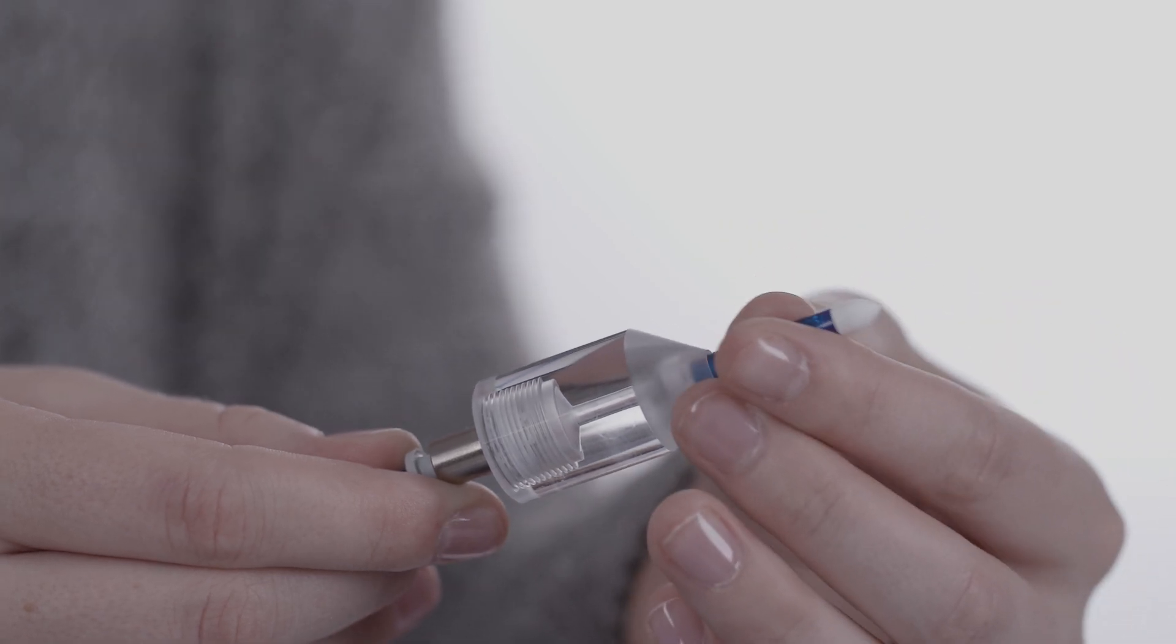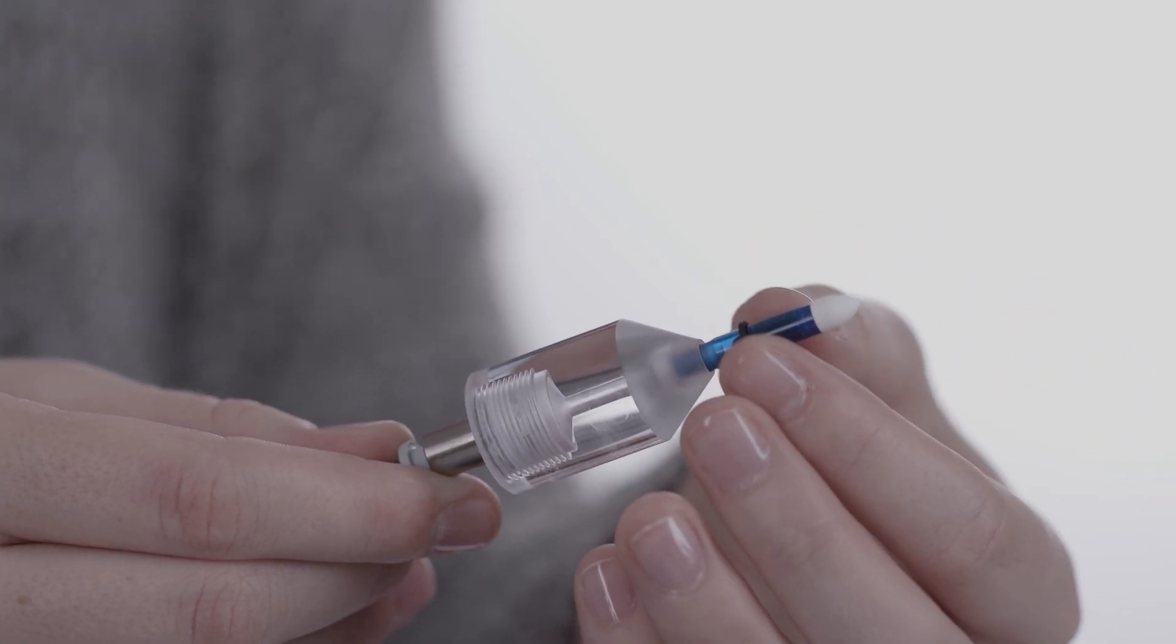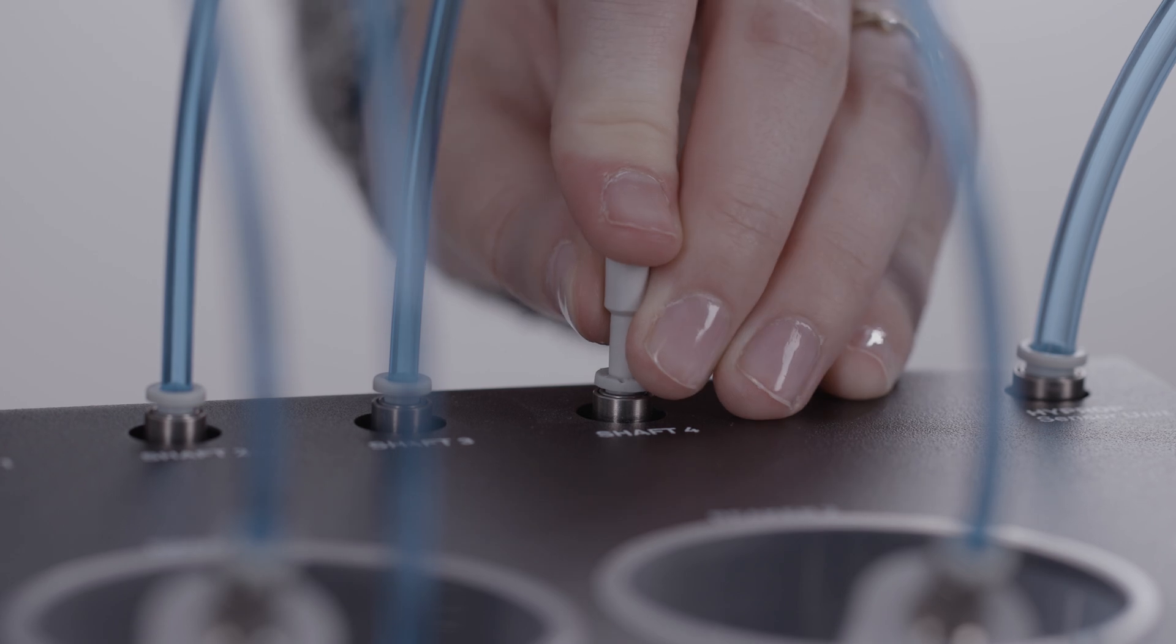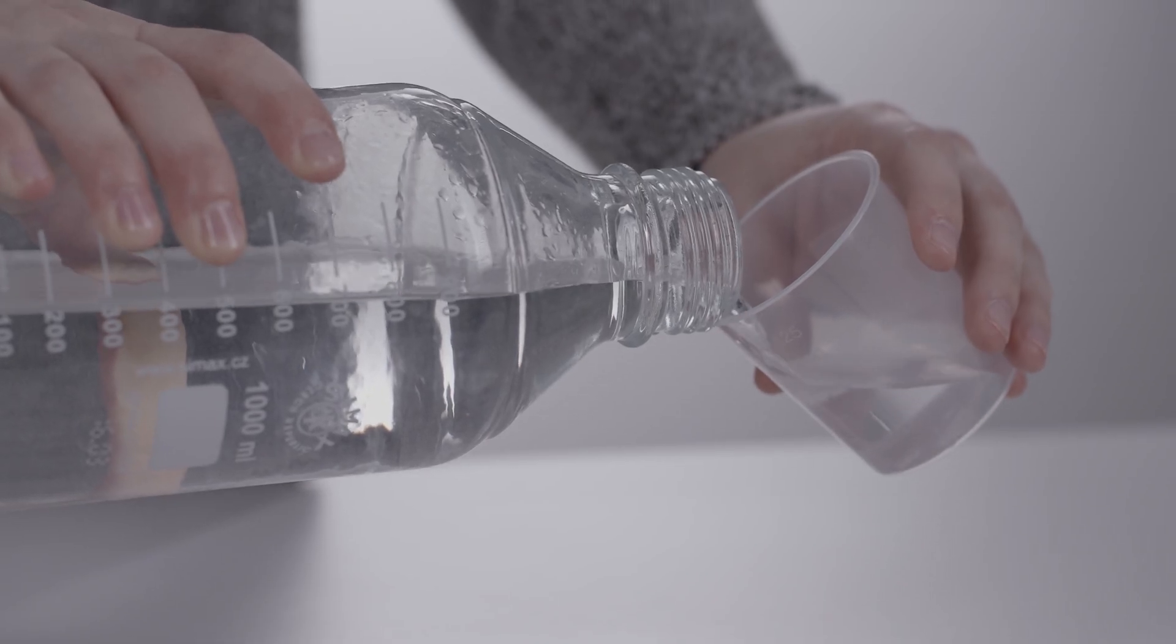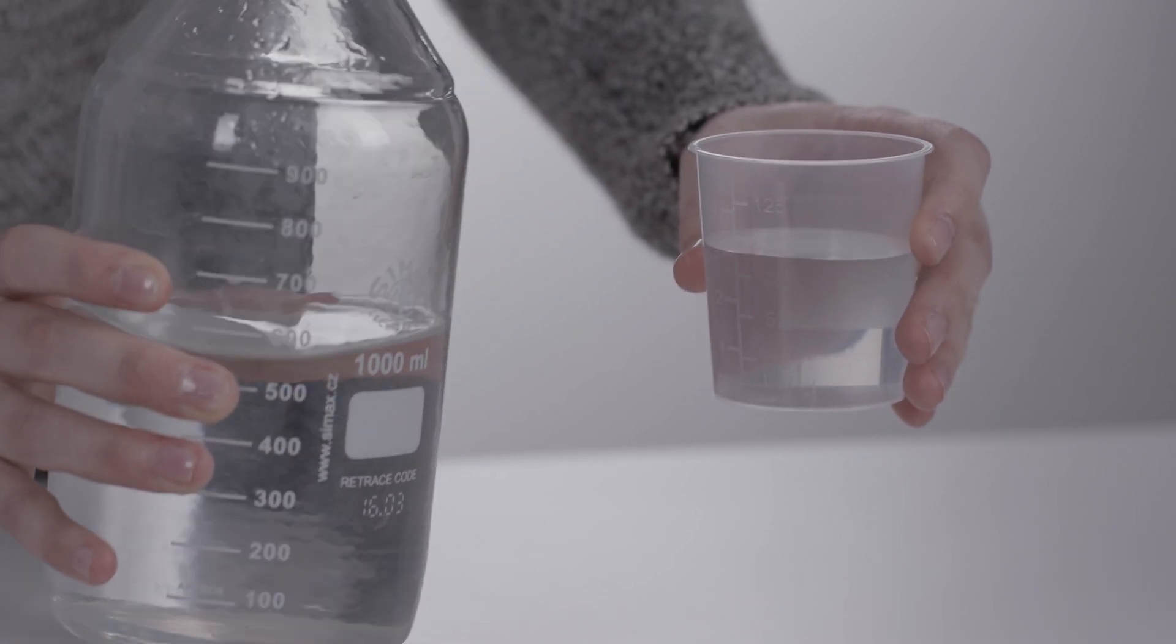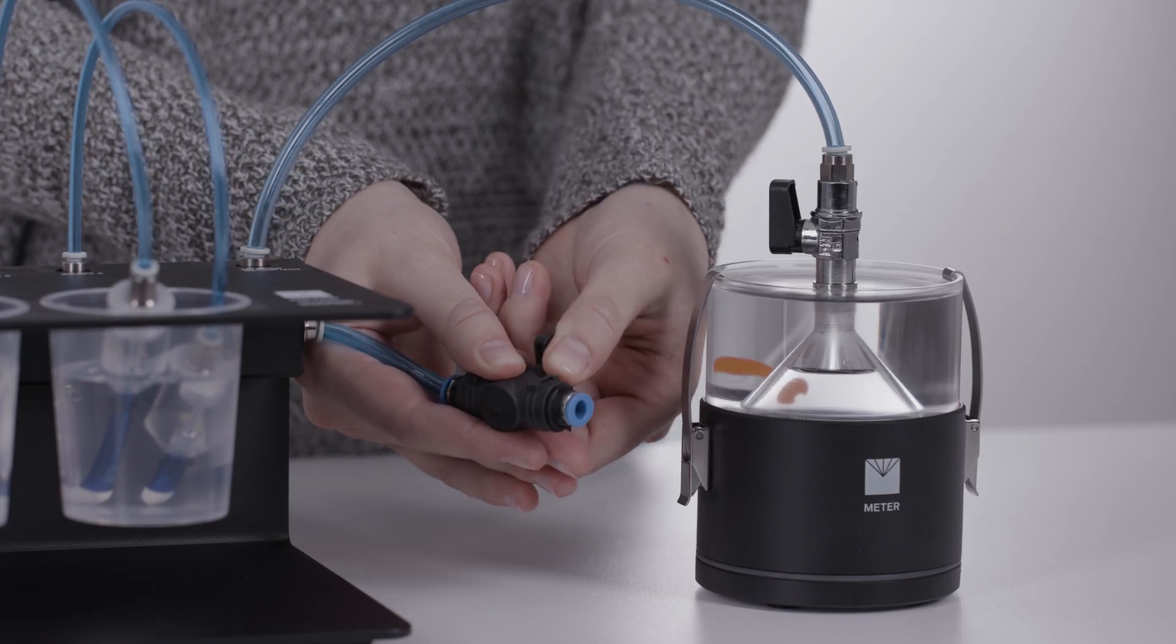Screw up to four tensio shafts into the adapters. Put blind plugs on unused connections. Fill the beaker or beakers with degassed deionized water. Close the valve of the beaker unit.